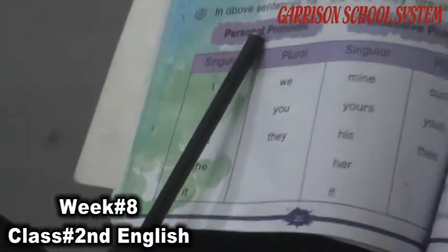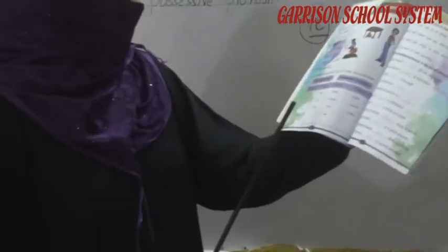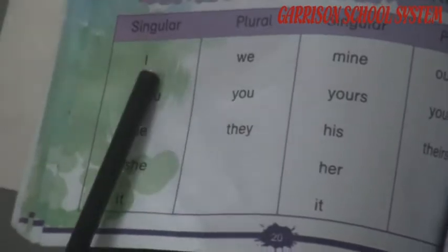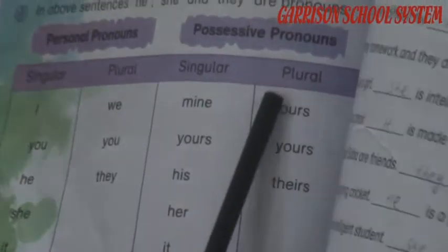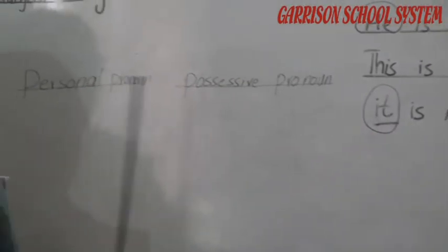The next section is about personal pronouns and possessive pronouns. Personal pronouns include I, you, he, she, it — these are singular. When changed to plural: I becomes we, you stays you, he becomes they. Possessive pronouns include mine, ours, yours, his, theirs, her, and its. Now we have learned about personal pronouns and possessive pronouns.